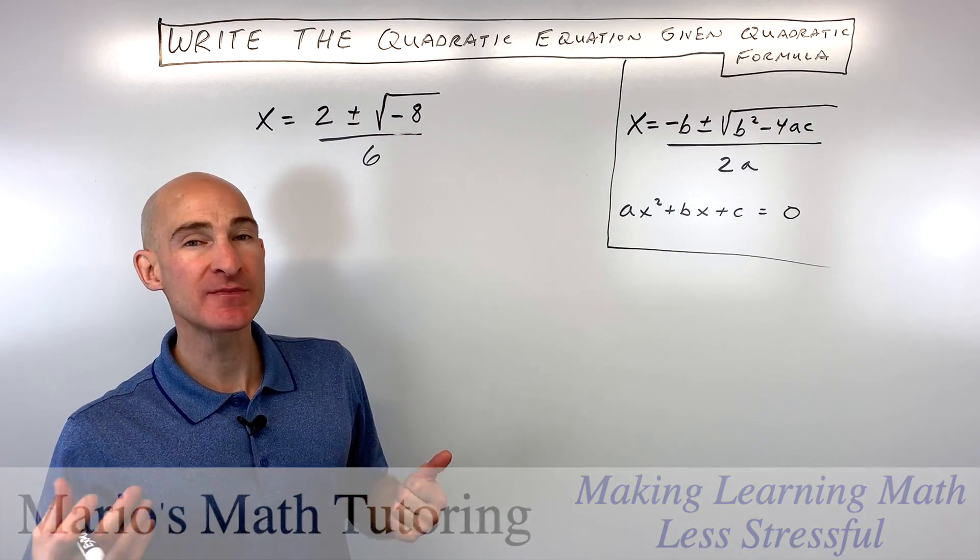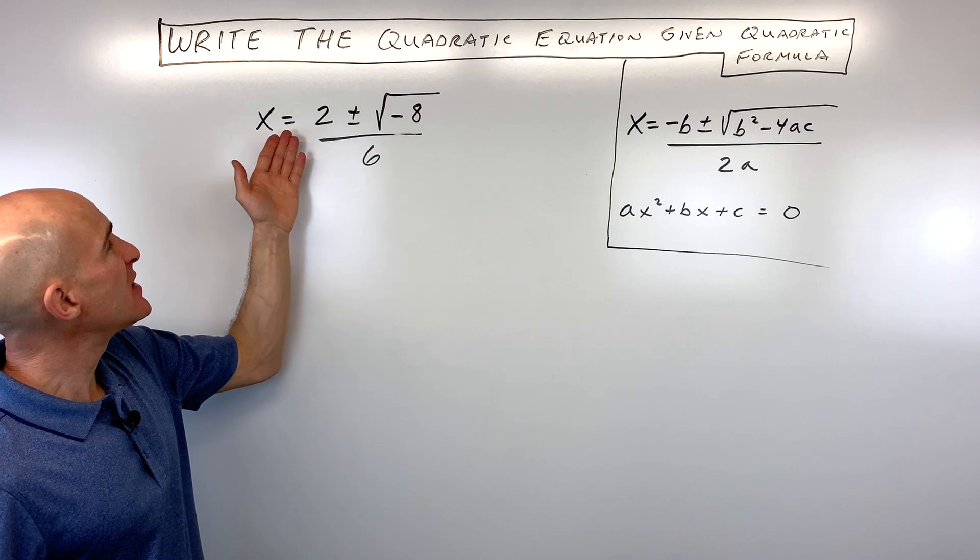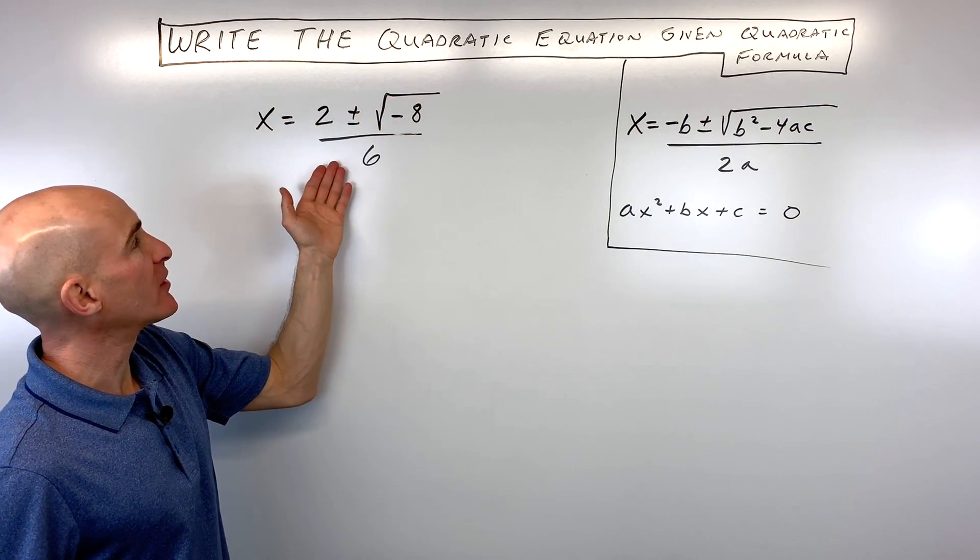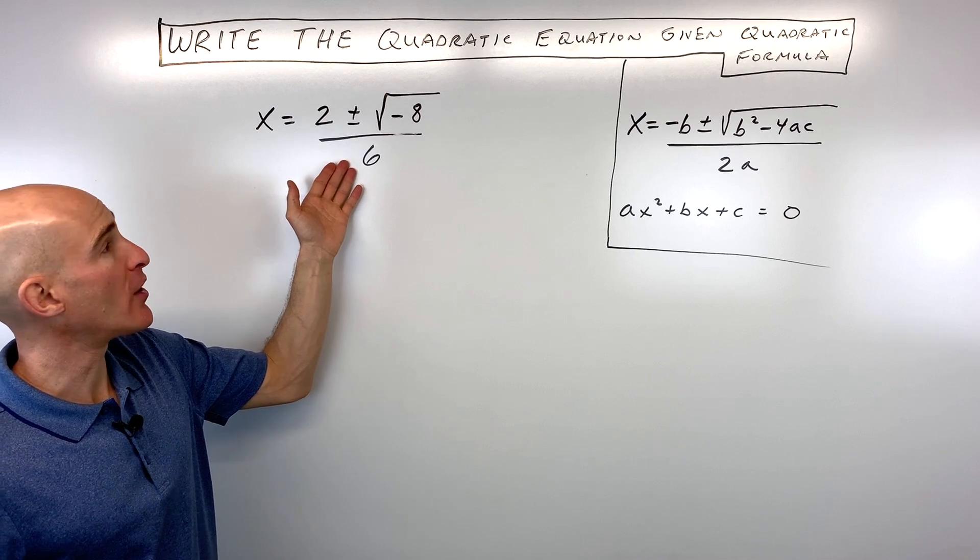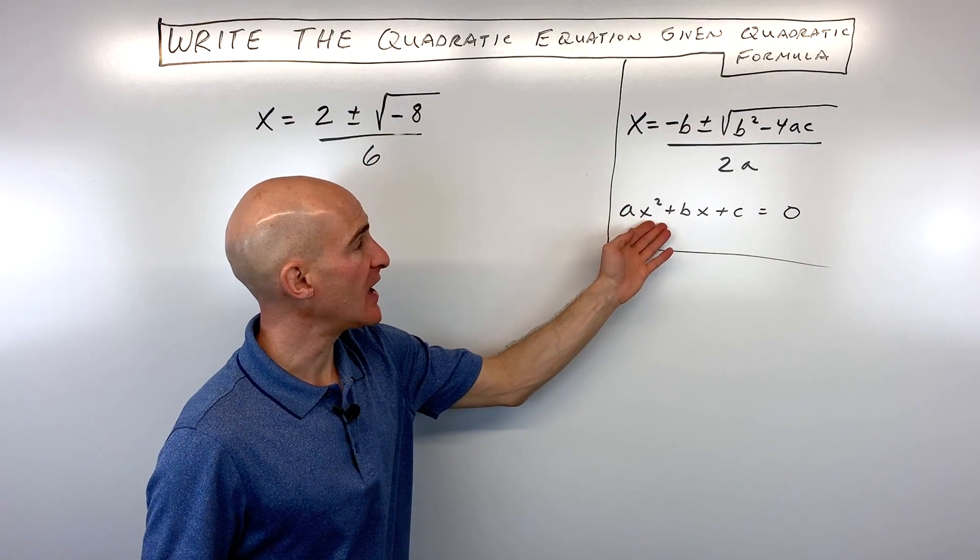In a sense we're working backwards in this video. Sometimes when you're learning quadratic formula, this is a problem that is presented. You can see here we're given the solution of the quadratic equation written in the form of the quadratic formula, but we're trying to go back to the original quadratic equation ax squared plus bx plus c equals zero.